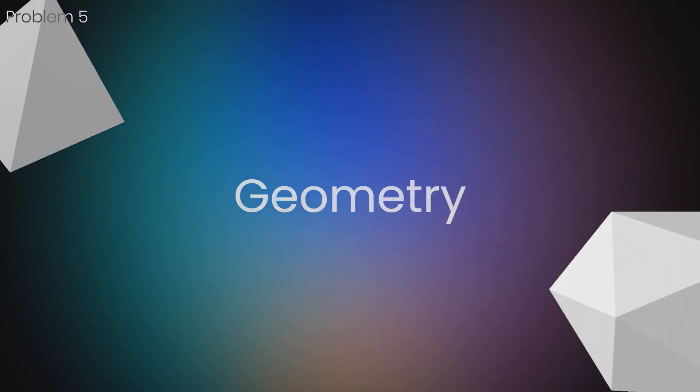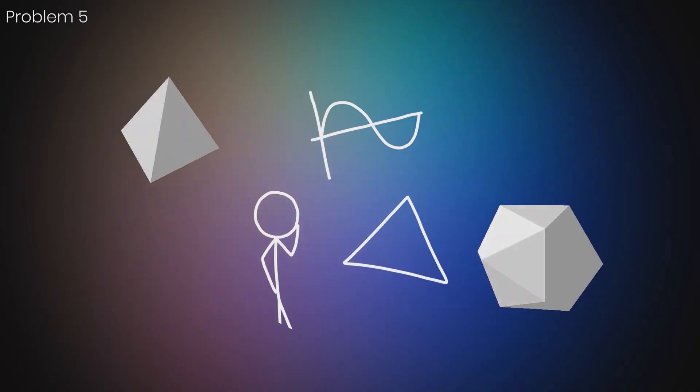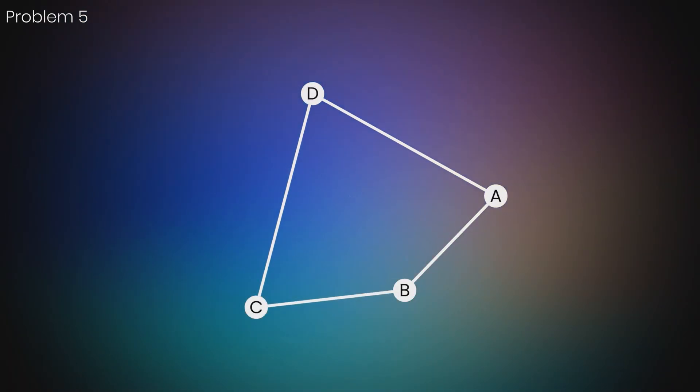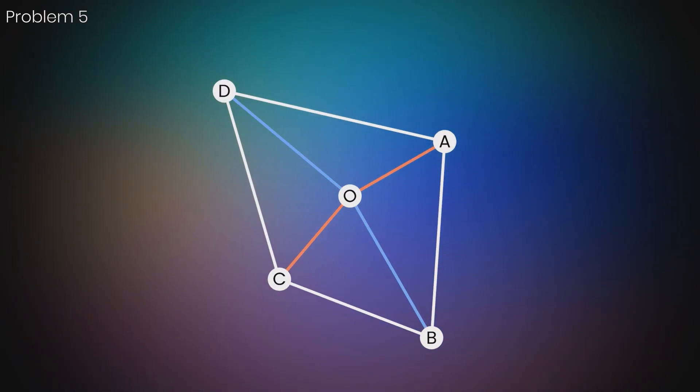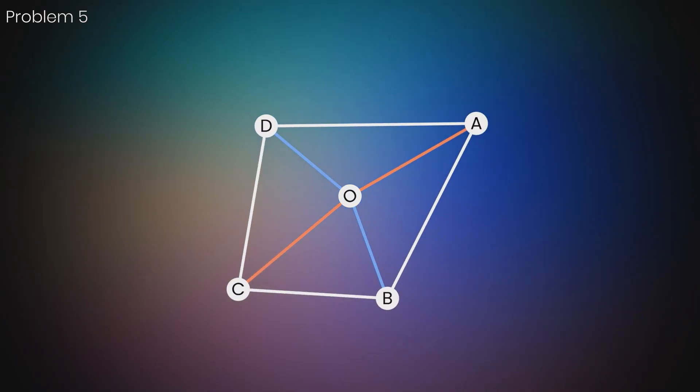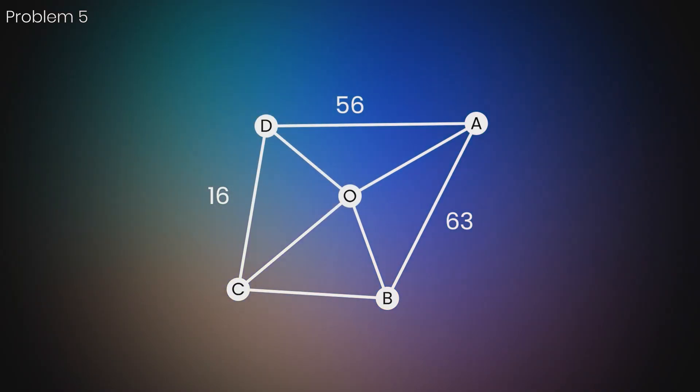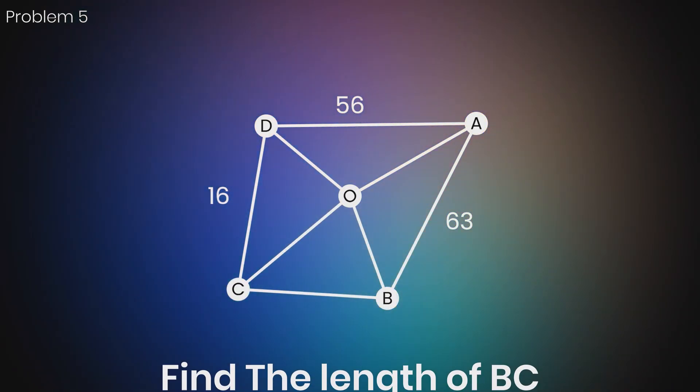Geometry is a fascinating chapter because it's quite visual and is home to some of the best tricks. ABCD is a polygon and O is a point equidistant to opposite vertices of the polygon. The area of opposite triangles are equal, the length of AB is 63, CD is 16 and AD is 56. Find the length of BC.